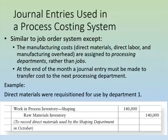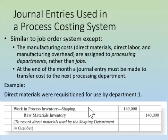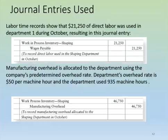At the end of the month we have to make a journal entry to transfer costs into the next processing department. To begin, here's how we take costs out of raw materials and move them into work in process inventory. Work in process inventory, which is an asset, goes up, and raw materials inventory goes down. That records our direct materials used.